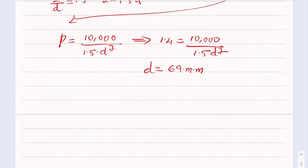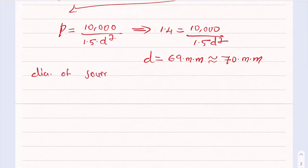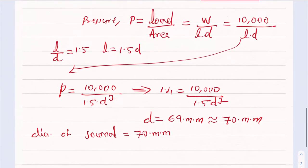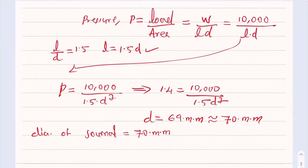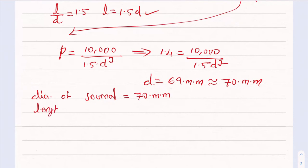In design it's acceptable to round values. So the journal diameter D = 70 mm. The journal length L = 1.5 × D = 1.5 × 70 = 105 mm.